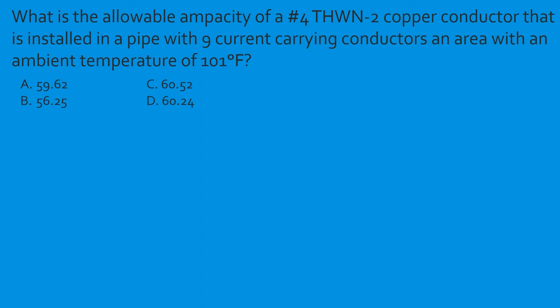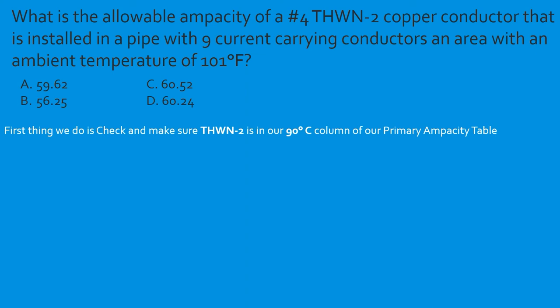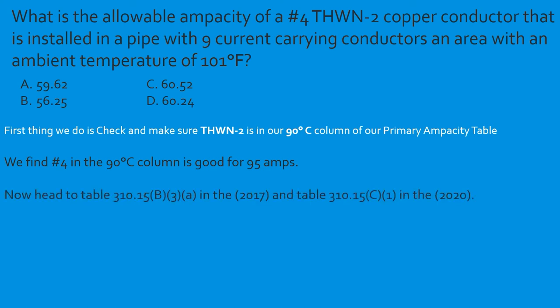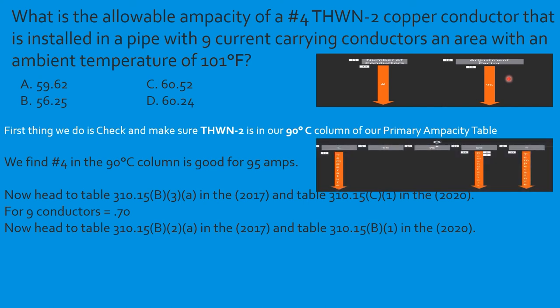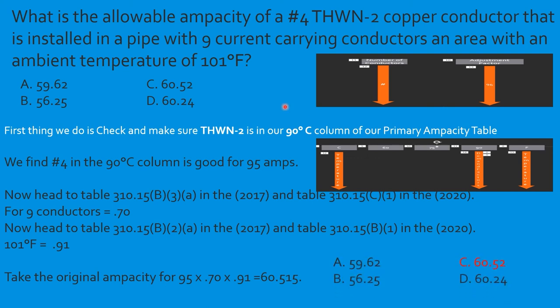Question: What is the allowable ampacity of a number 4 THWN-2 copper conductor installed in a pipe with nine current-carrying conductors in an area with an ambient temperature of 101°F? Confirm insulation is in the 90°C column. Number 4 copper is 95 amps. Nine conductors — bundling adjustment factor is 0.70. Temperature at 101°F — correction factor is 0.91. So: 95 × 0.70 × 0.91 = 60.515 amps. Select C.